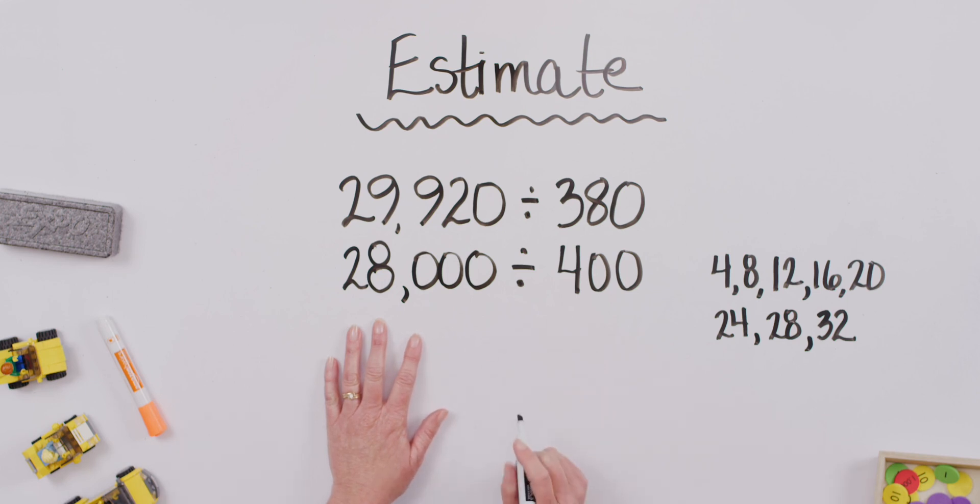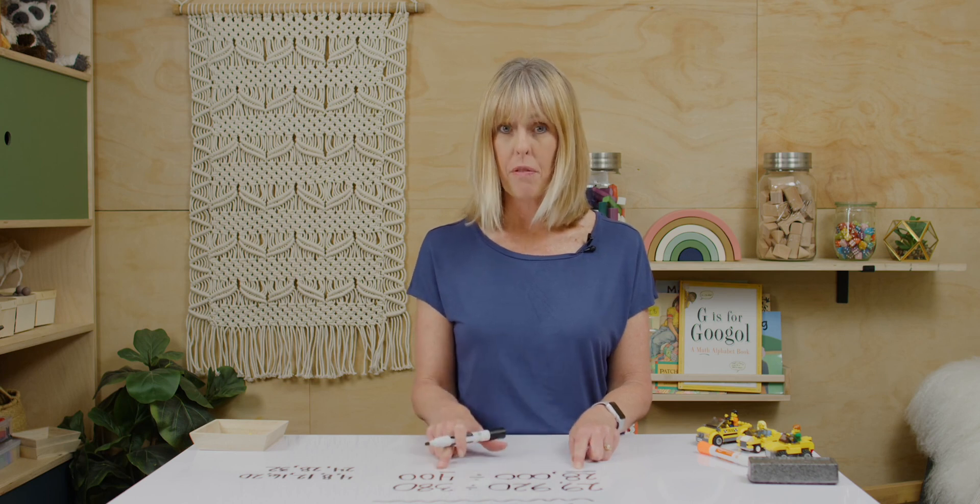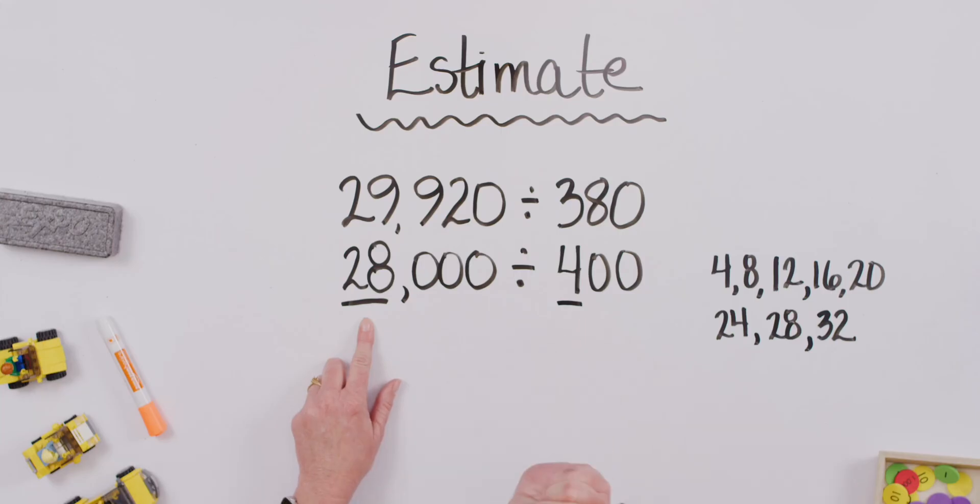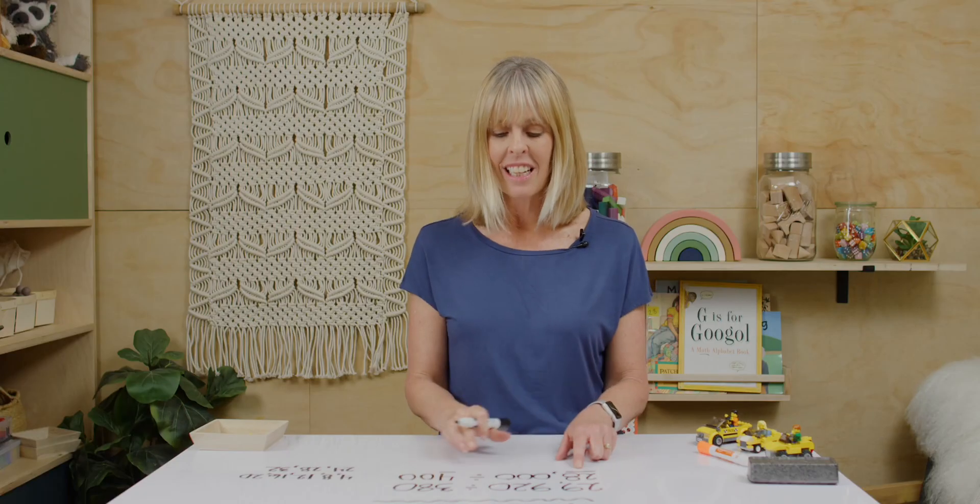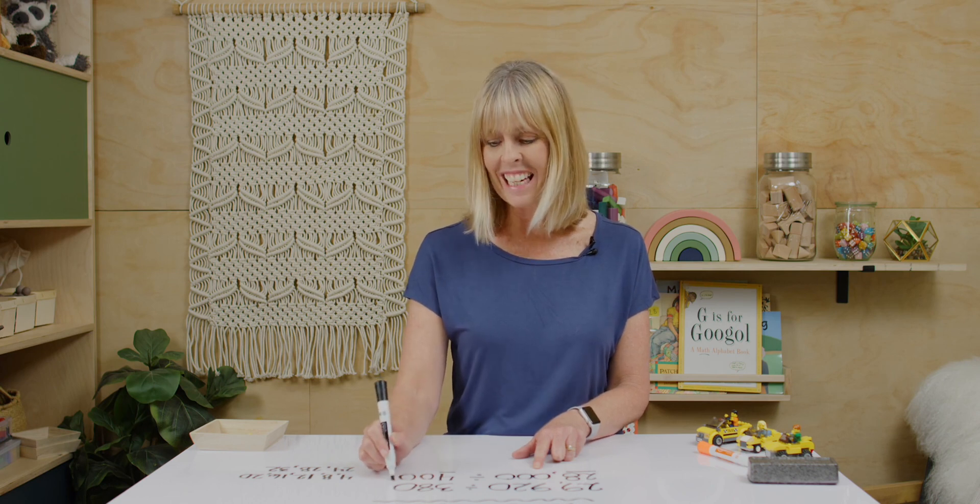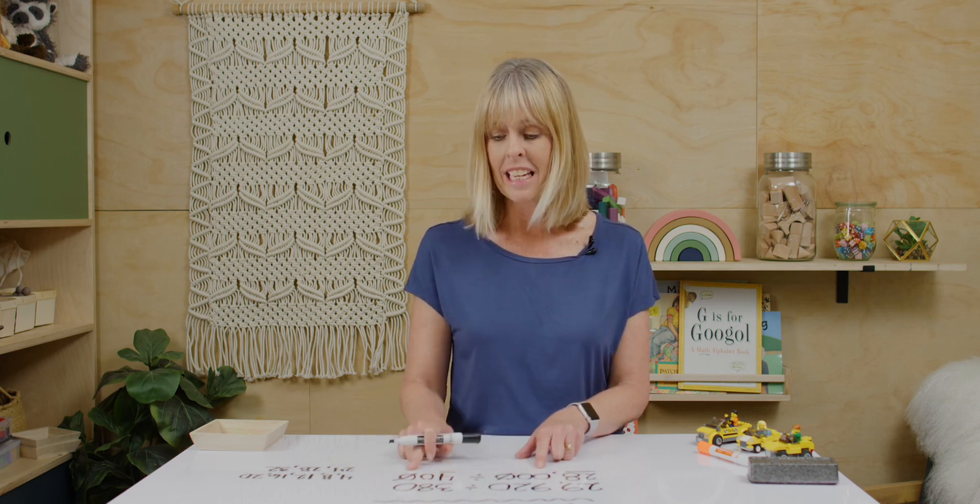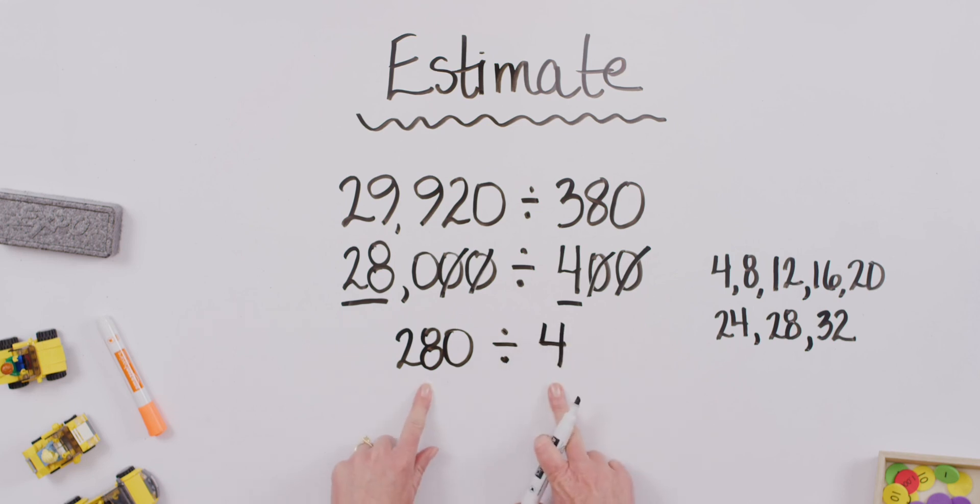Now, our strategy is we're going to look at our 28 and our 4. I bet you can think of what 28 divided by 4 is. Hold on to that, because even before we do that, let's try to simplify these two. I do see a lot of zeros here. We're going to divide each one by 10, and then we're going to divide each one. We can actually divide each one by 100, which is going to give us 280 divided by 4.